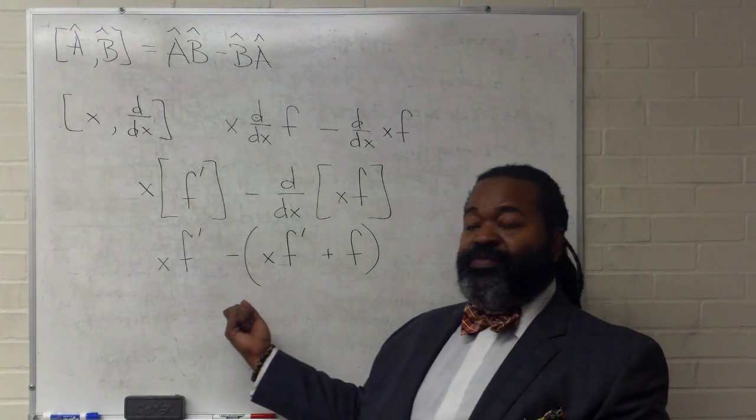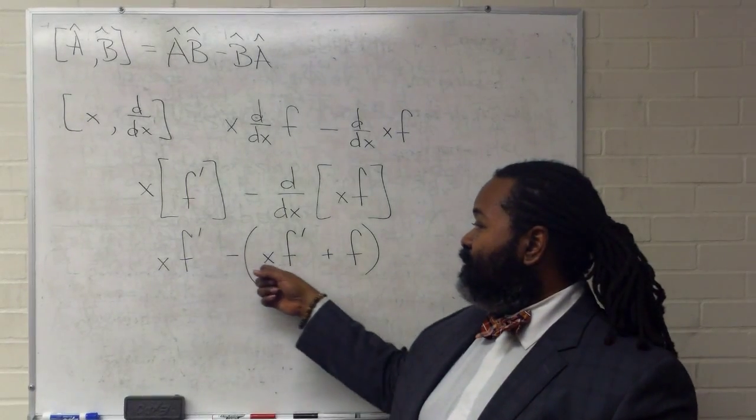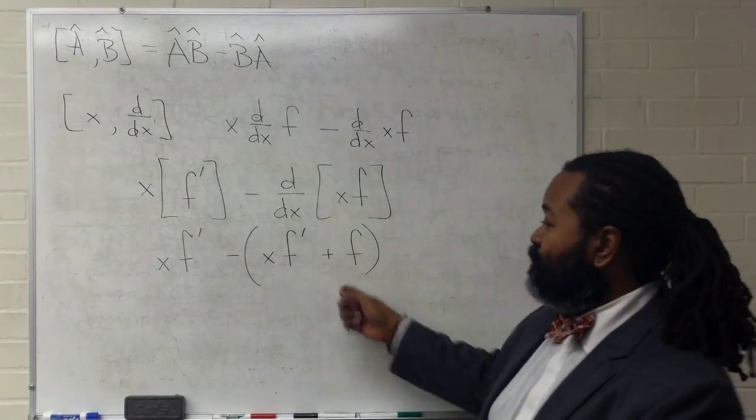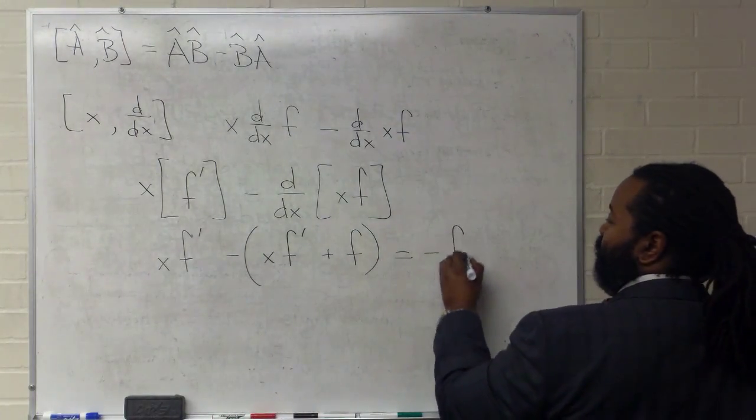And now we can simplify this out. X times F prime minus X times F prime. We'll cancel these two, leaving us with negative F.